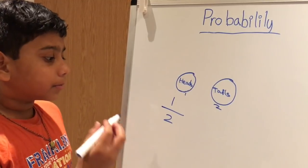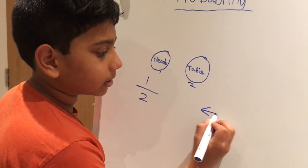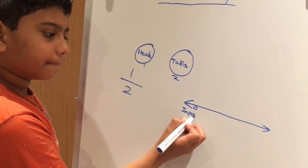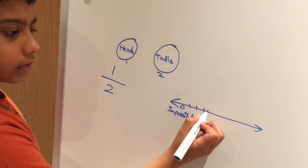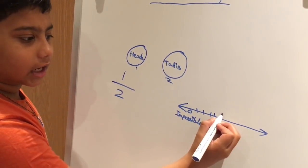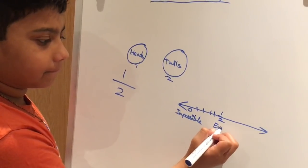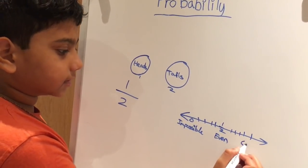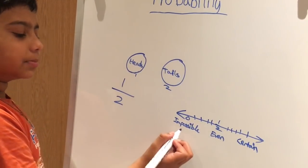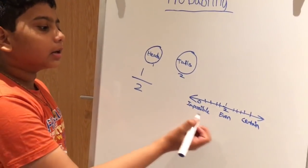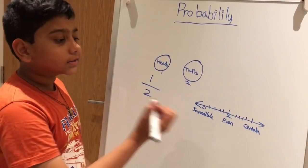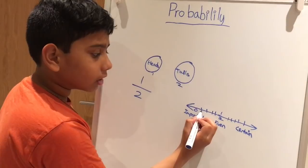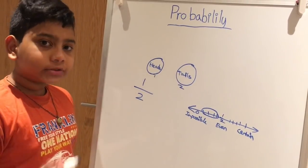Let's place that on a probability line. A probability line starts from zero, which is impossible, and goes to one, which is certain. In the middle it has one over two, which we call even. Impossible is something that can never happen, even is something that has an equal chance to happen, and certain is something that would definitely happen.